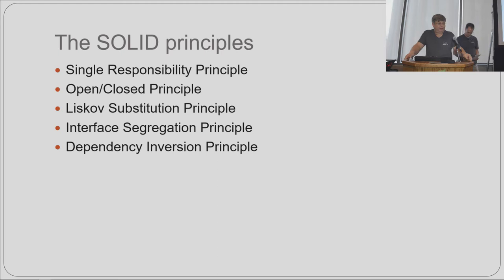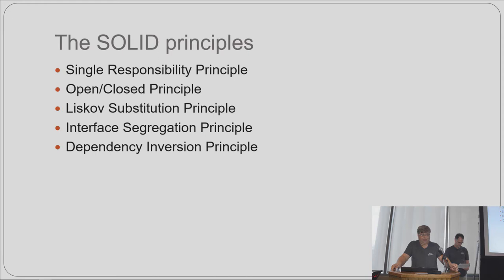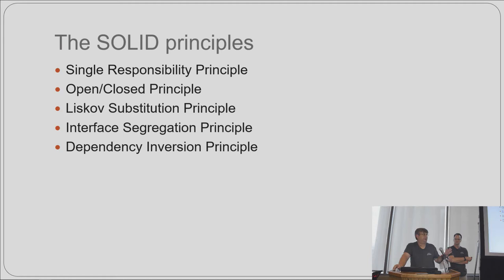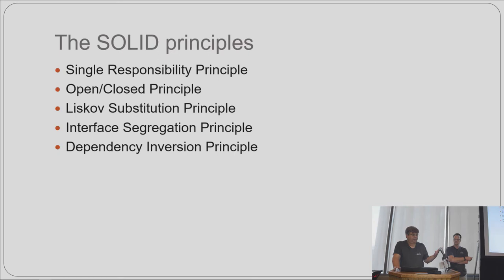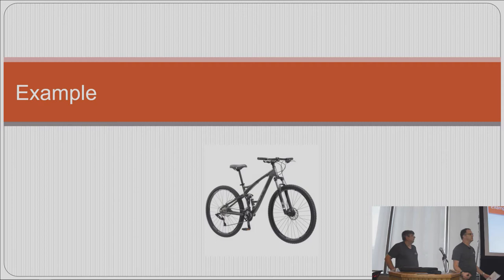How can we make sure our code is not fragile, is agile, maintainable, and doesn't rot? One way is to keep in mind some design principles — five principles originally promulgated by Uncle Bob, Robert Martin, gathered into a grouping by Michael Feathers of 'Working with Legacy Code' fame. He calls them the SOLID principles: Single Responsibility, Open/Closed, Liskov Substitution, Interface Segregation, and Dependency Inversion.